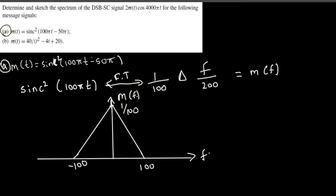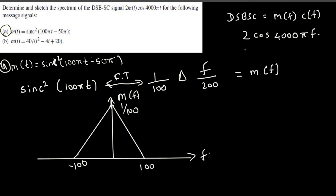From the DSB-SC signal we can right away find where it is going to be centered by looking at the carrier frequency. The DSB-SC signal contains m(t) multiplied by the carrier c(t). If we remove m(t), we have 2cos(4000πt). Writing this in the form 2cos(2πft), we can see that 2πf = 4000π, so the carrier frequency fc = 2000 Hz. That is where the spectrum will be centered.